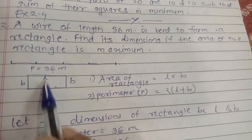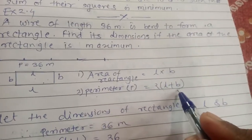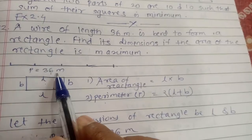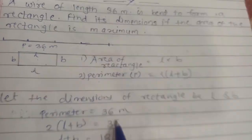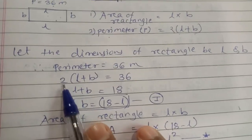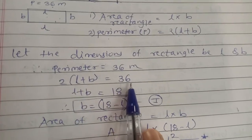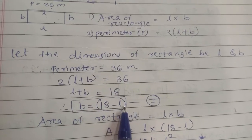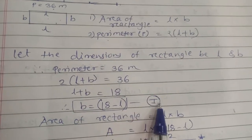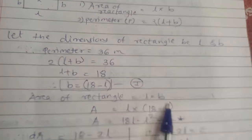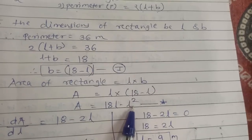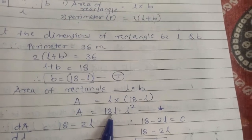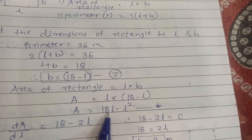The perimeter is given as 36 meters. Let the dimensions of the rectangle be l and b. So 2(l + b) = 36, which gives l + b = 18, and therefore b = 18 − l. This is equation number one. The area of the rectangle is A = l × b = l(18 − l), so A = 18l − l².